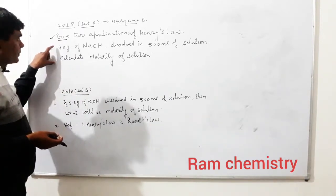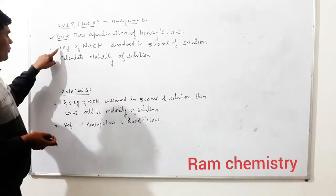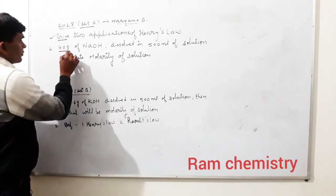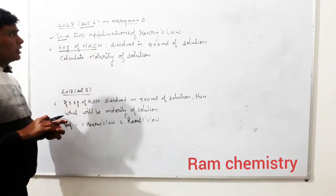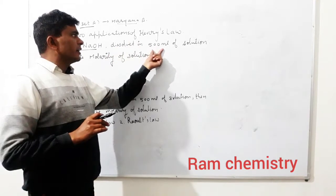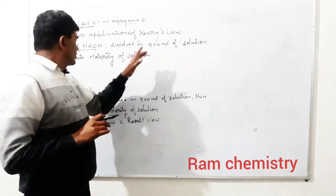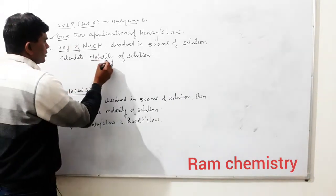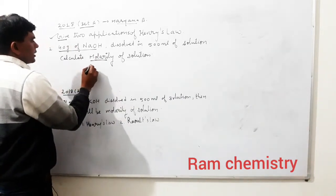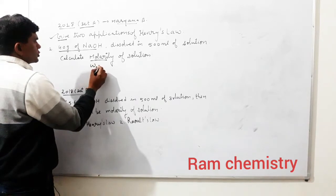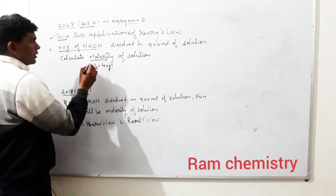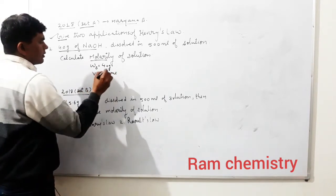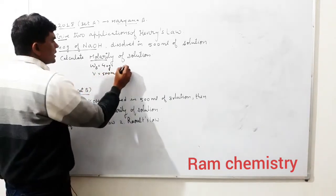The second question is a numerical. 4.0 gram of NaOH — yani 4.0 gram NaOH dissolve kiya gaya hai — in 500 ml of solution. Aapko molarity find out karni hai. Chaliye molarity nikalte hain. Yahan pe hame given hai: weight of solute = 4.0 gram, volume = 500 ml. Molar mass ki hume need hogi.